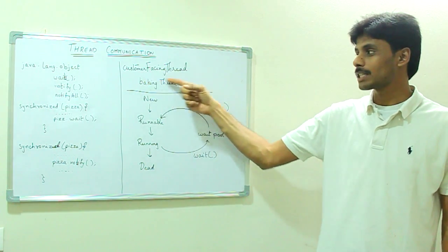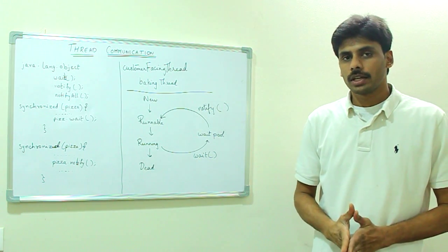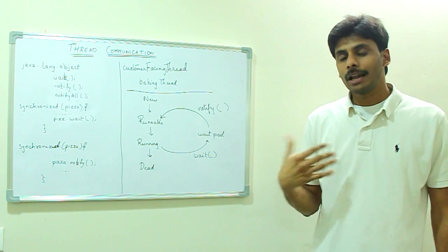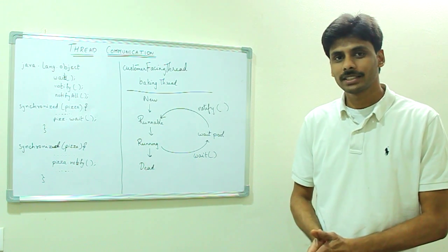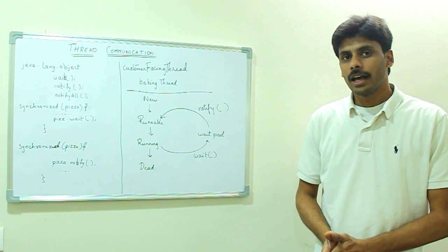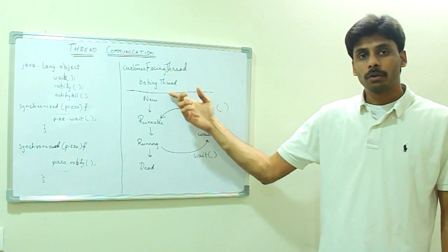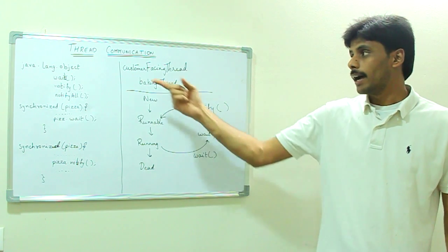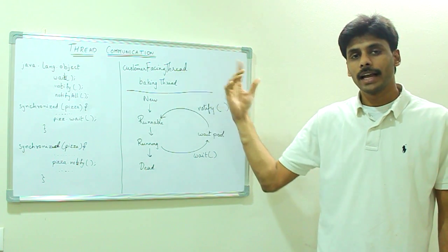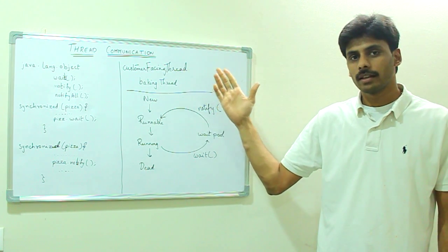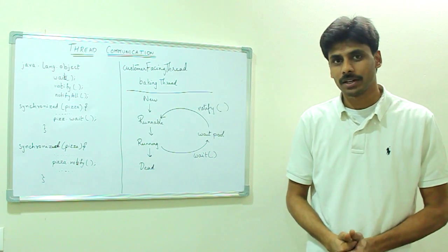One, the customer-facing thread, which allows the customer to choose his favorite pizza toppings. And then the baking thread, which bakes the pizza. And the customer-facing thread, at the end of it, will hand over the pizza to the customer.